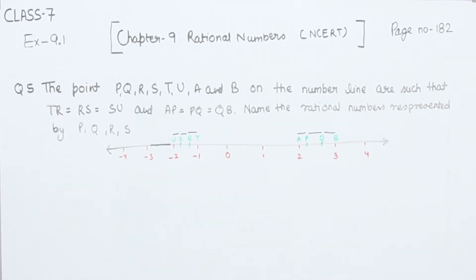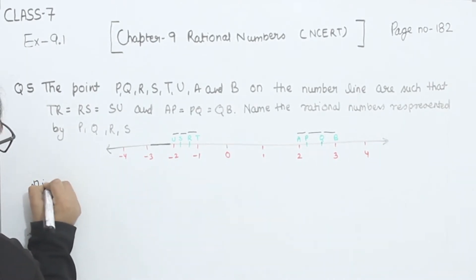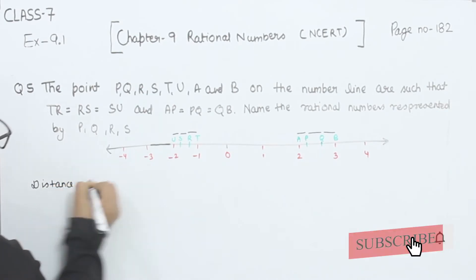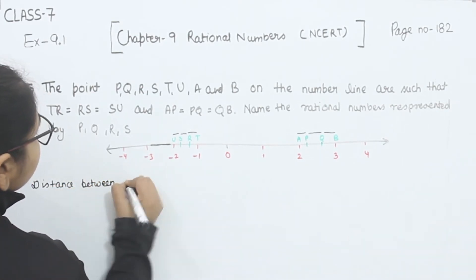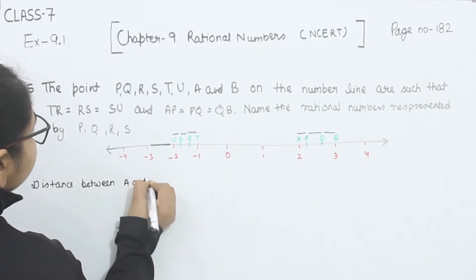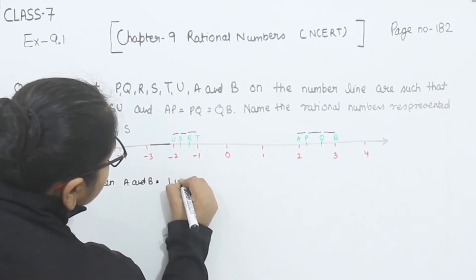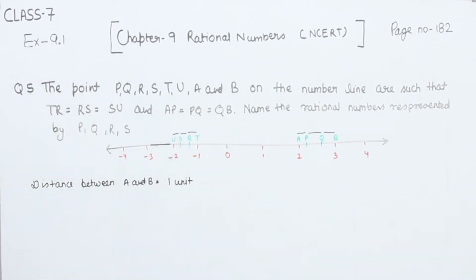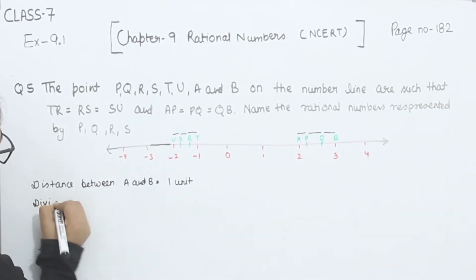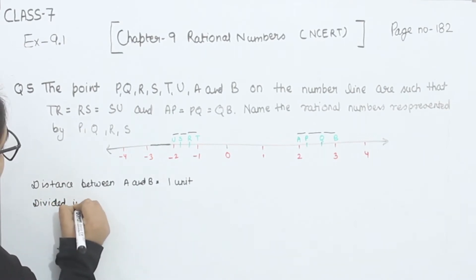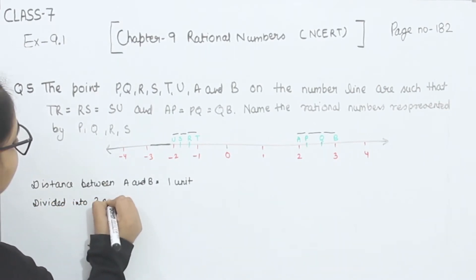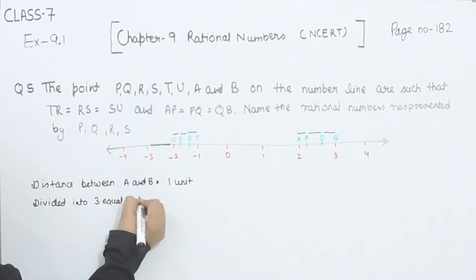First of all, I am going to write here the distance between A and B. This is A, this is B, this is 2, this is 3 — that means they have a distance of one unit. Now this one unit is divided into three equal parts.